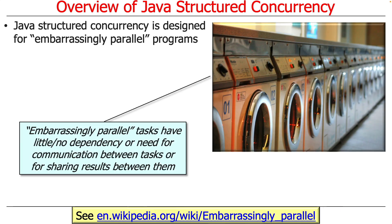Java structured concurrency is really designed for embarrassingly parallel programs — a concept we've seen before when talking about Java parallel streams. An embarrassingly parallel program basically doesn't have any dependencies or need to communicate with other concurrently executing computations. They can all start up at the beginning of the scope and be joined when done. A favorite example is washing machines and dryers in a dorm or laundromat where you can run everything in parallel and they don't depend on each other. Obviously the dryer can't start until the wash is done, but that's just a two-phase example of embarrassingly parallel tasks.